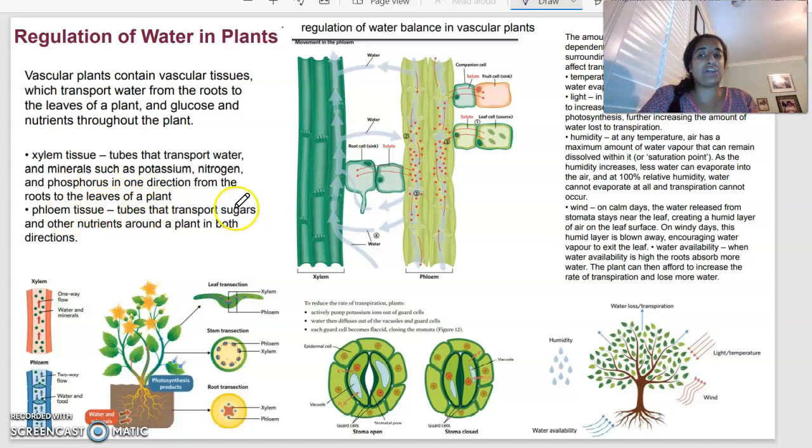And the two major tissues that we look at are the xylem tissue and the phloem tissue. So the xylem tissue are tubes that transport water and minerals like potassium or nitrogen in one direction from the roots to the leaves. And the phloem tissue are tubes that transport sugars and other nutrients around the plant in both directions. So you can see here in the xylem, there's just that one-way flow of water and minerals, whereas the phloem, there's a two-way flow. And that's really important.